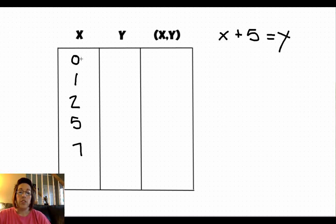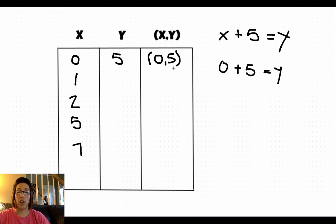We would plug this value in our equation in the x spot. So this would become 0 plus 5 equals y. Well, 0 plus 5 is 5. And then when we go to graph it, that would turn into our ordered pair. Our x value would come first, followed by our y value. So this coordinate would turn into over 0, up 5.